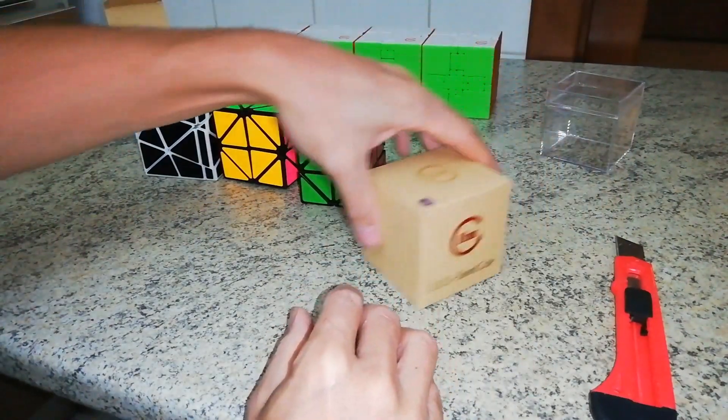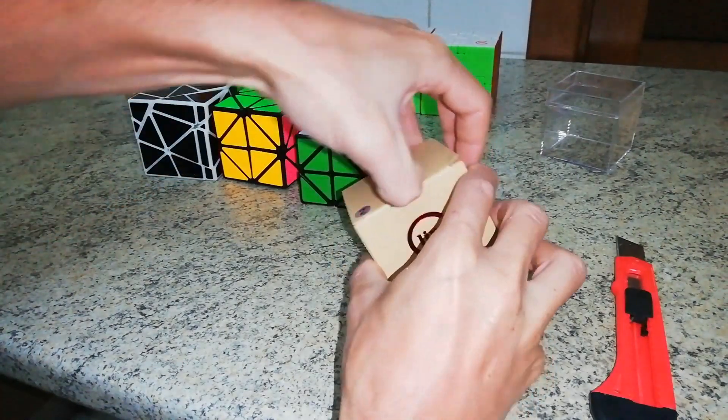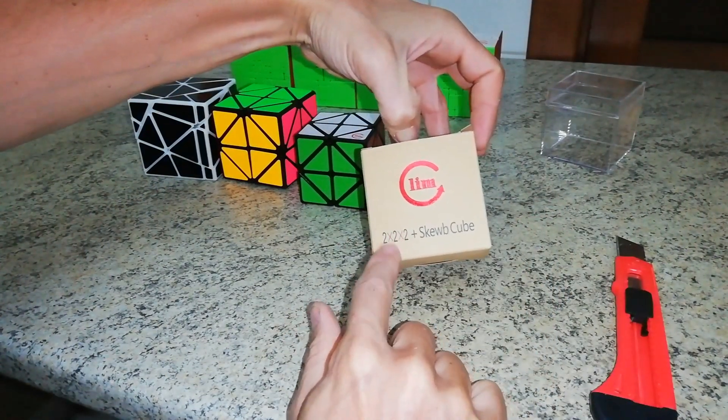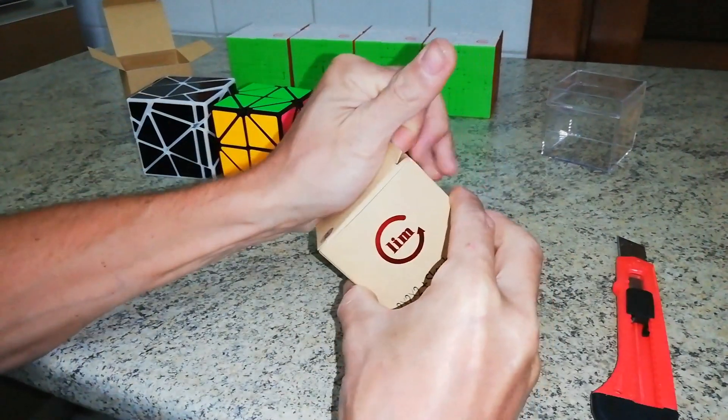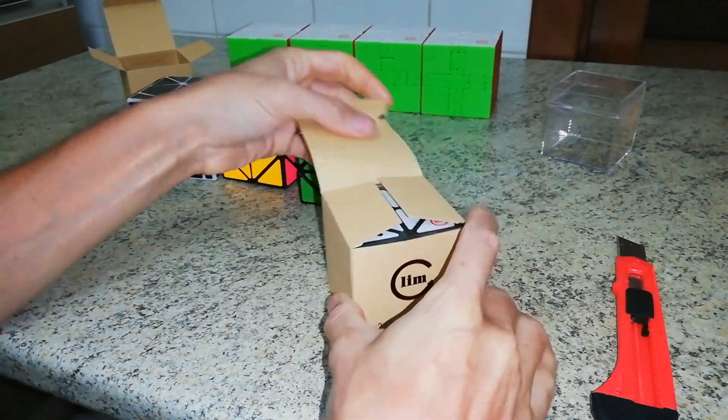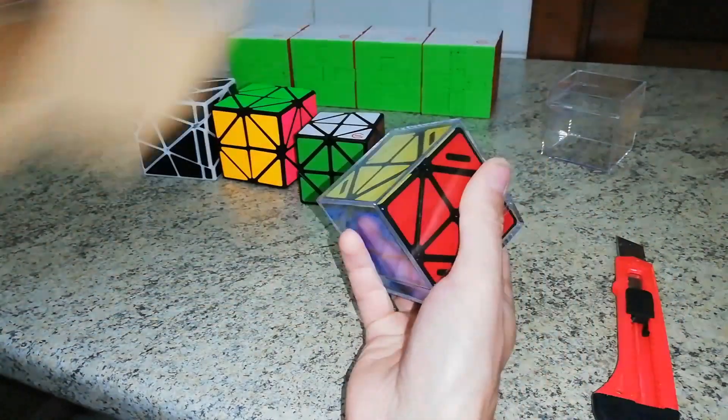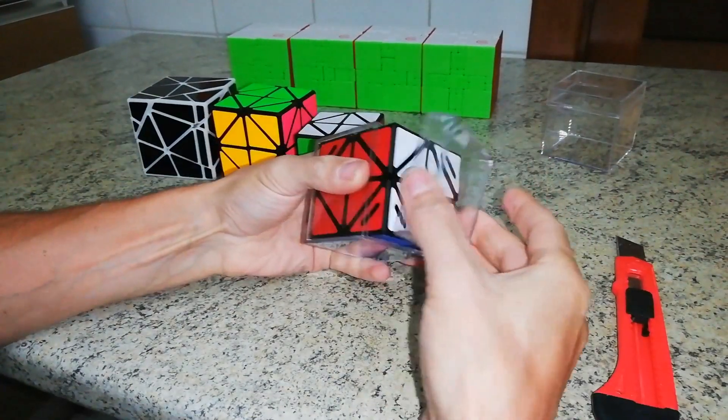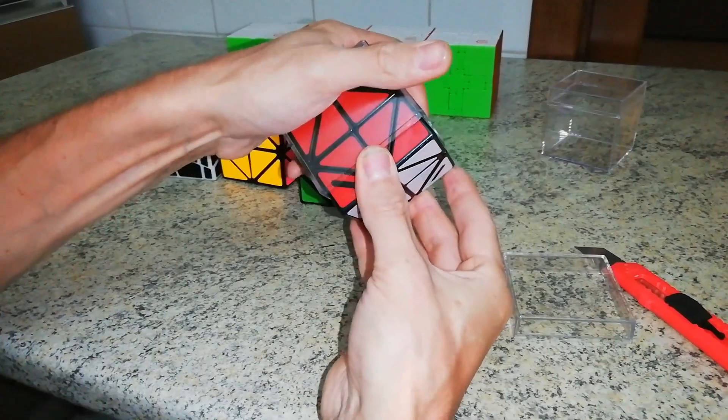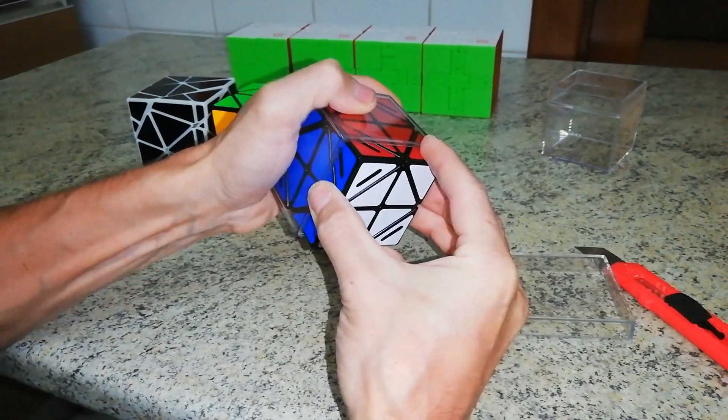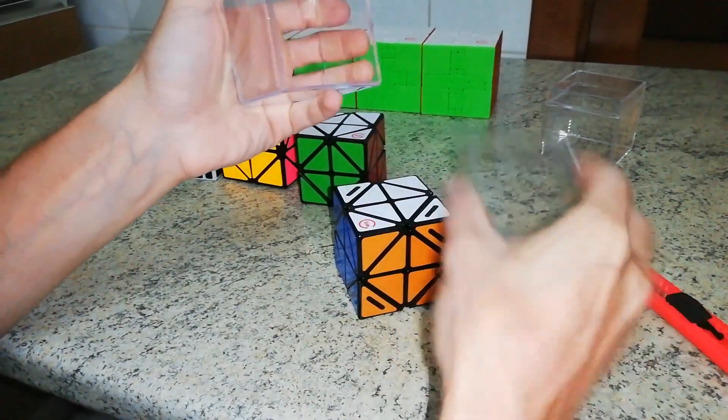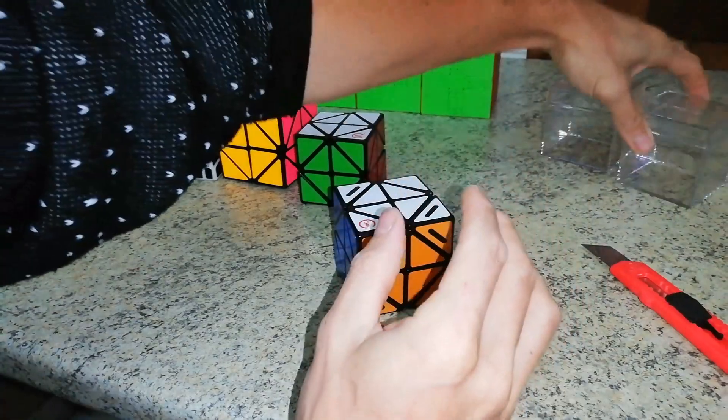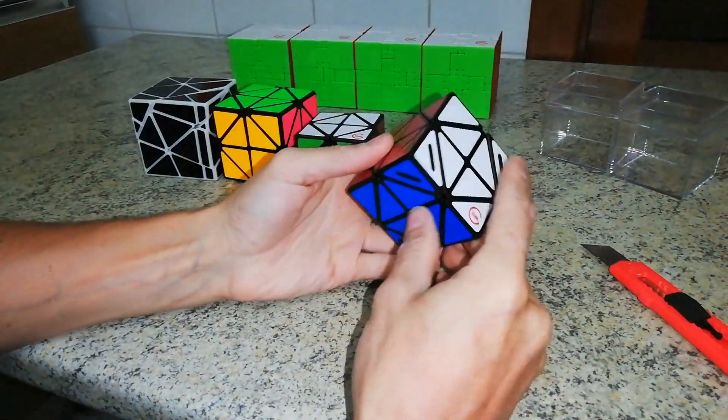But this one, which puzzle is this? As you can see it's called again 2x2x2 plus skew cube. But this one is different. Oh my god. Here we have another box. I want to take the pieces out. Oh my god, wonderful box. And this puzzle.